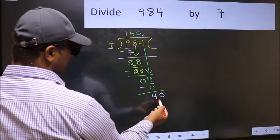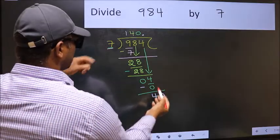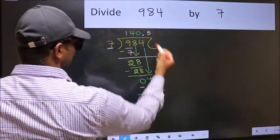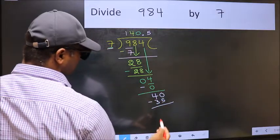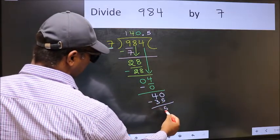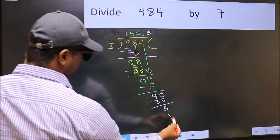So 40. A number close to 40 in 7 table is 7 fives, 35. Now you should subtract. 40 minus 35, 5. And you continue the division.